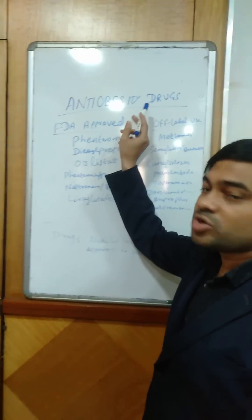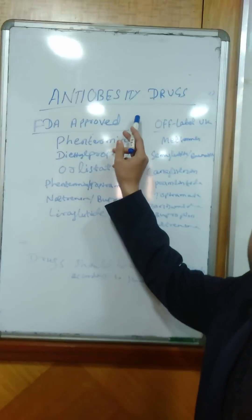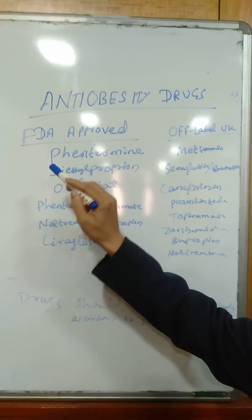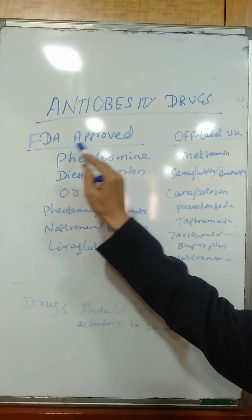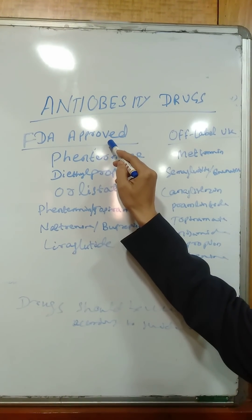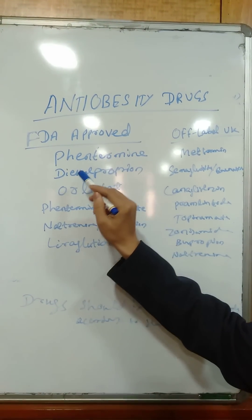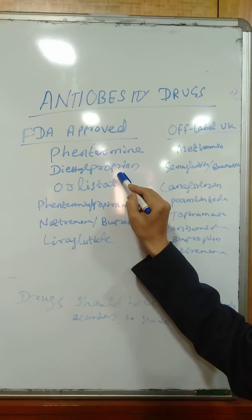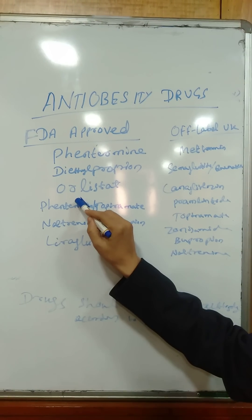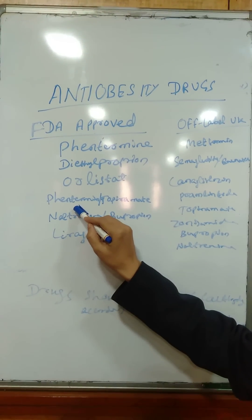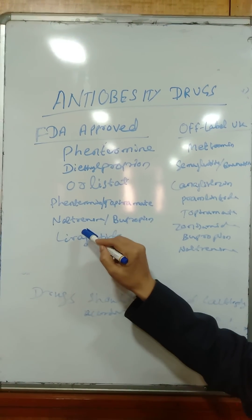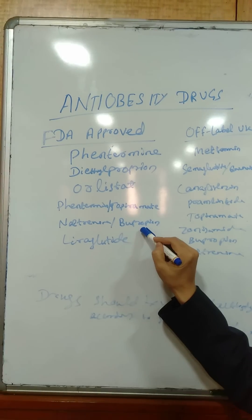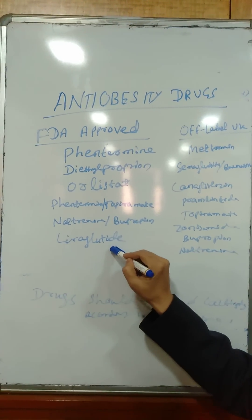Anti-obesity drugs are used in the treatment of obesity. These are the FDA approved drugs that are used in obese patients: Phentermine, Diethylpropion, Orlistat, Phentermine plus Topiramate, Naltrexone plus Bupropion, and Liraglutide.